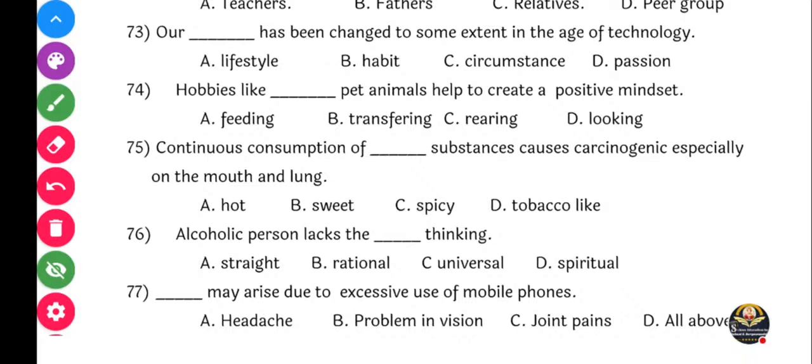Next question: Alcoholic person lacks the dash thinking. Options: Straight, rational, universal, or spiritual. Correct answer is B, rational thinking. Echa madhe rational correct ahe - straight thinking manje ekdam saradha vichar karo na asakai hotne. Universal thinking manje sampurna universal bagari vichar - rational manje yoggya kai ayoggya kai. Yasa vichar to karo shakat nahi.